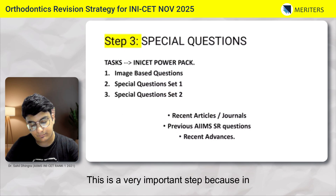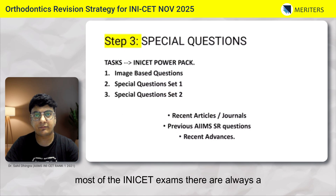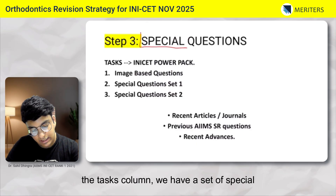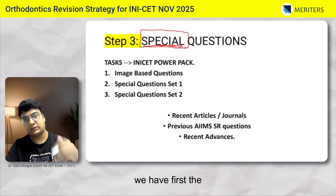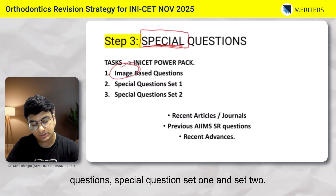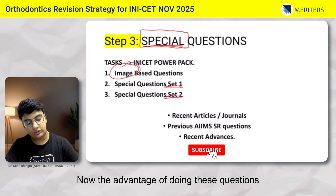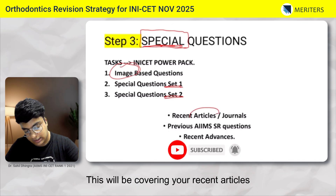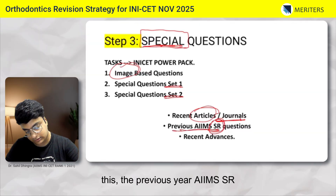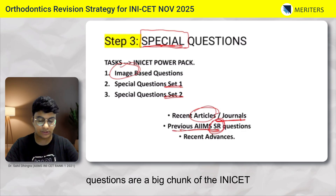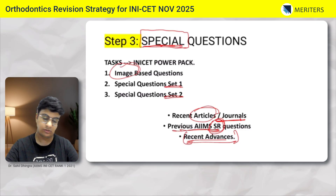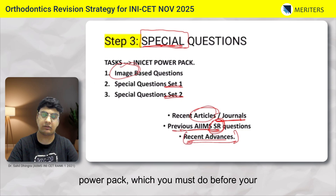Step three is very important because in most INICET exams there are always a few repeat questions from past year AIIMS papers. In our INICET Power Pack, under the tasks column, we have a set of special questions: first the chapter-wise tasks, and then three separate tasks — image-based, special question set one, and set two. These cover recent articles and journals frequently asked in AIIMS and INICET, previous year AIIMS SR questions, and recent advances in dentistry. For orthodontics, these three tasks in the Power Pack must be completed before your INICET.